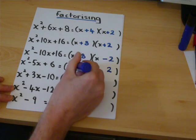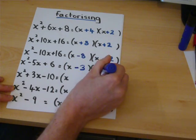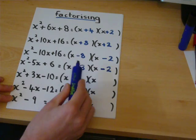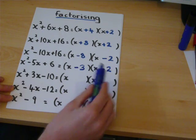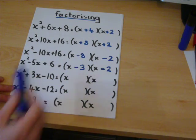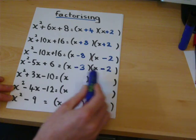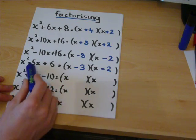However, if we have a minus three and a minus two, then minus three times minus two is still plus six, but minus three take away two is minus five.